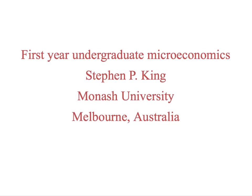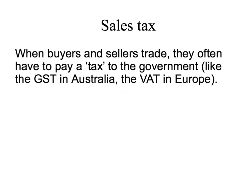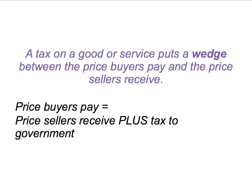Welcome back to First Year Undergraduate Microeconomics. In our last presentation, we introduced the concept of a sales tax, or what's known as a goods and services tax, or GST in Australia, or a value-added tax, or VAT, in Europe. We noted that a tax on a good or service puts a wedge between the price buyers pay and the price sellers receive — in other words, the price buyers pay is simply equal to the price sellers receive plus the tax to the government.